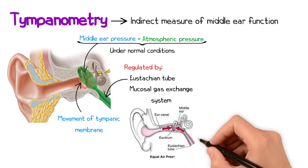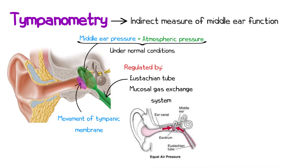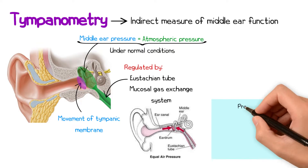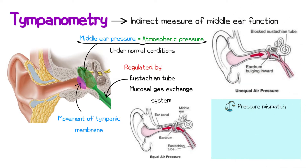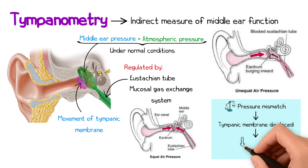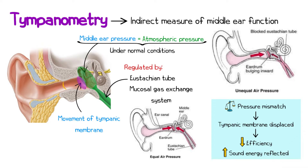When these pressures are equal, the tympanic membrane remains in its physiologically optimal position, allowing efficient sound transmission into the middle ear. However, when there is a pressure mismatch between the middle ear and the environment, the tympanic membrane is displaced from its physiological position, reducing its efficiency in transmitting sound and increasing the amount of sound energy reflected back into the ear canal.